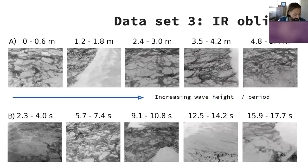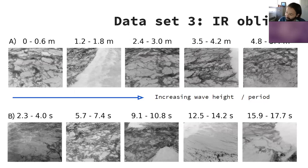As wave height increases in the infrared imagery, you get decreasing patch sizes. As wave period increases, you get increasing sizes of patches of relatively warm water.